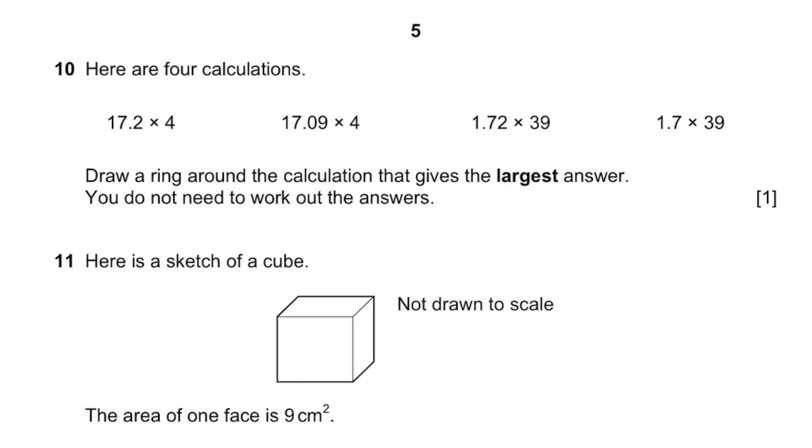Now, going to question 10. Here are 4 calculations. 17.2 times 4. 17.09 times 4. 1.72 times 39. 1.7 times 39. Drawing around the calculation that gives the largest answer, you do not need to work out the answers. Well, if we can't work out the answers, how do we do it? Let's compare. So, 17.2 times 4. This is obviously greater than 17.09 times 4 since 17.2 is greater than 17.09. Multiplying both by 4 will not change the sign. So, this cannot be the answer.